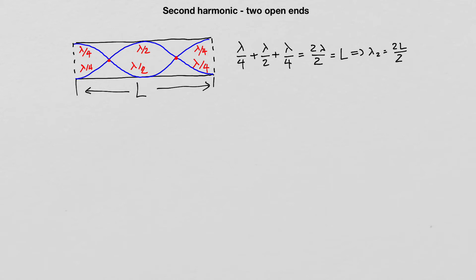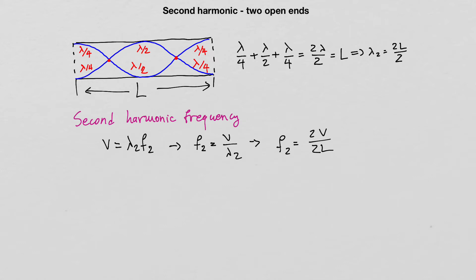Now let's find the frequency of the second harmonic. Using V = λ₂ × f₂, we get f₂ = V / λ₂. Substituting λ₂ = 2L/2 gives the final result: the frequency of the second harmonic f₂ is equal to two times the speed of sound in air divided by two times the length of the pipe.